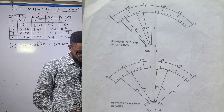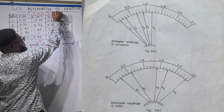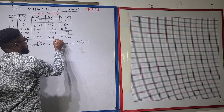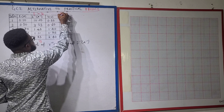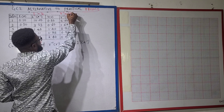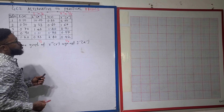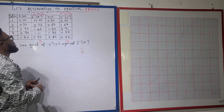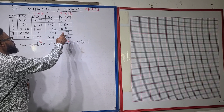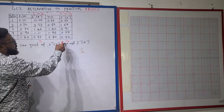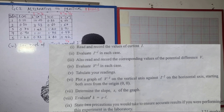On roman numeral IV, we were told to evaluate V raised to power minus one — that is, 1 over V. So: 1 divided by 0.20 = 5; 1 divided by 0.60 = 1.67; 1 divided by 1.40 = 0.71; 1 divided by 1.75 = 0.57; and 1 divided by 2.40. On roman numeral V, we are told to plot a graph of V⁻¹ on the vertical axis and i⁻¹ on the horizontal axis.